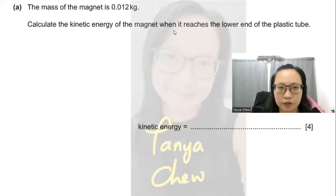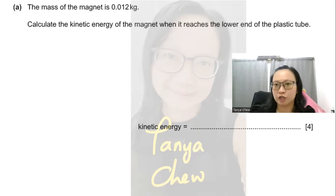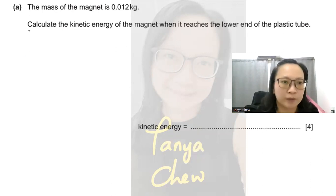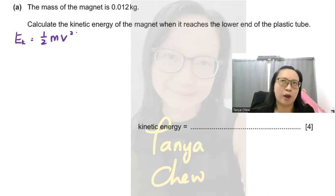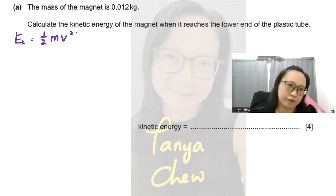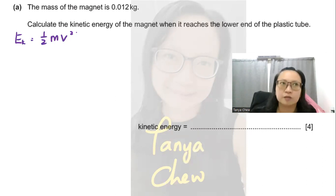Now let us dive into question A. The mass of the magnet is 0.012 kilograms. Calculate the kinetic energy of the magnet when it reaches the lower end of the plastic tube. When asked to calculate kinetic energy, always write down the equation: Ek equals half mv squared, where m is the mass of the magnet and v is the speed of the magnet — in this case the final speed, since the initial speed is zero.